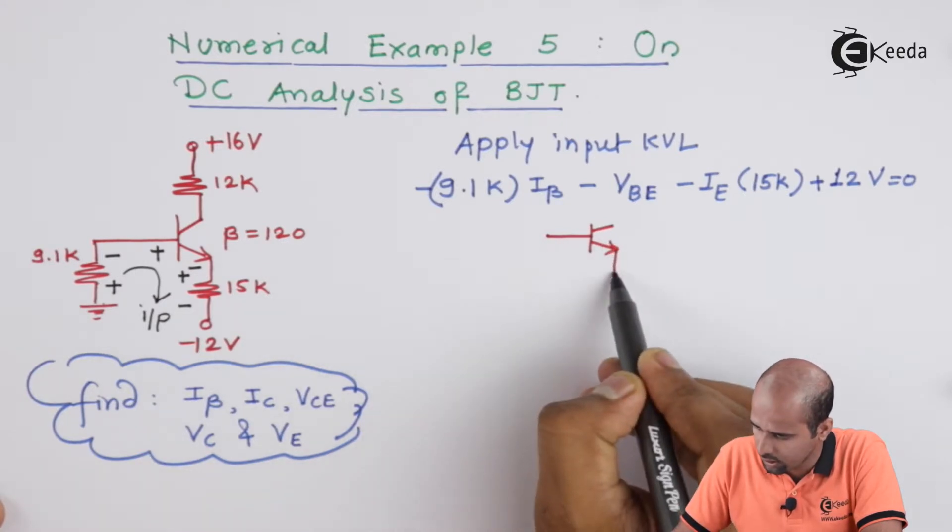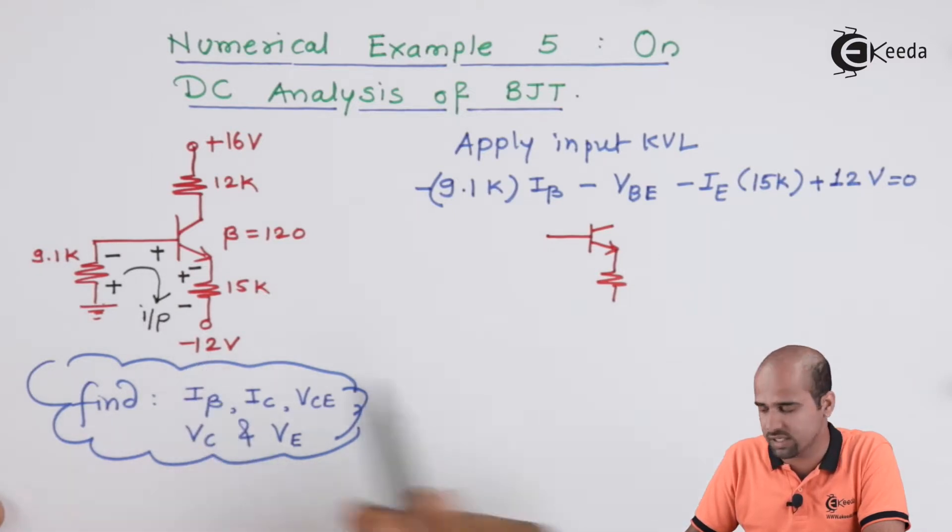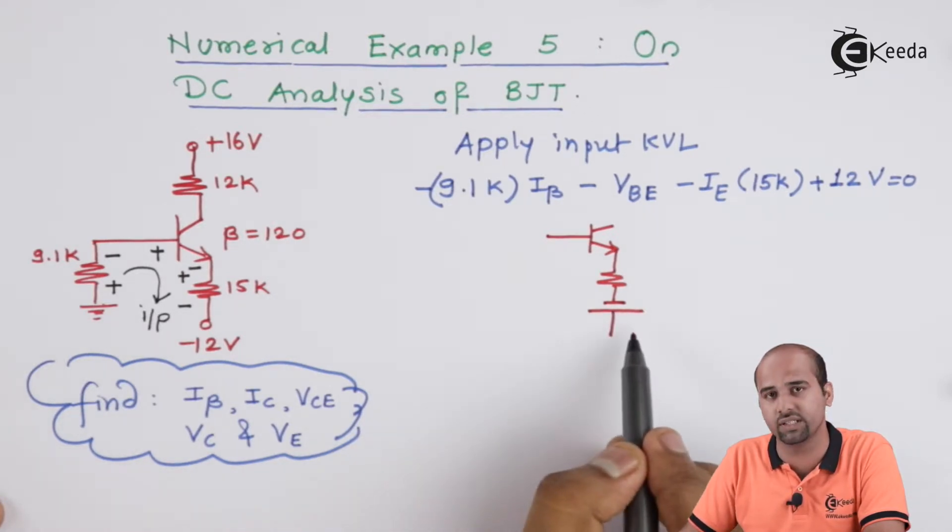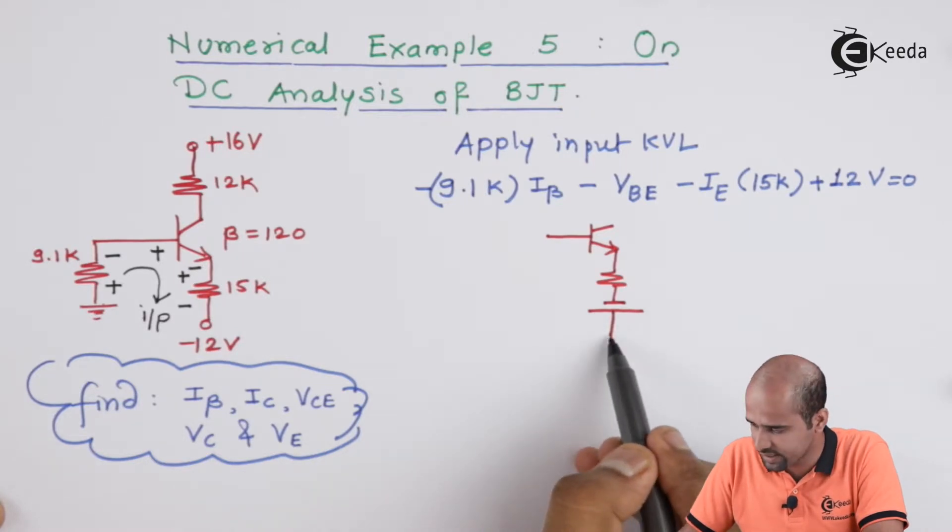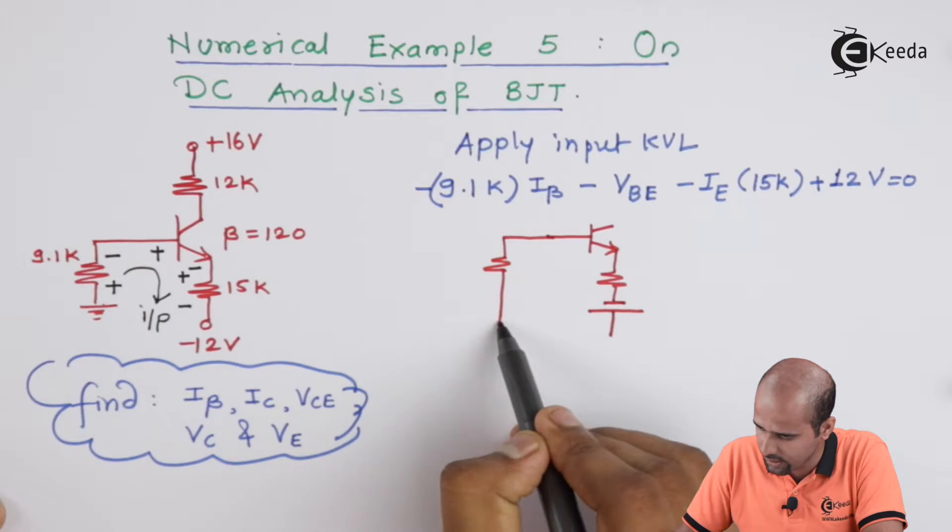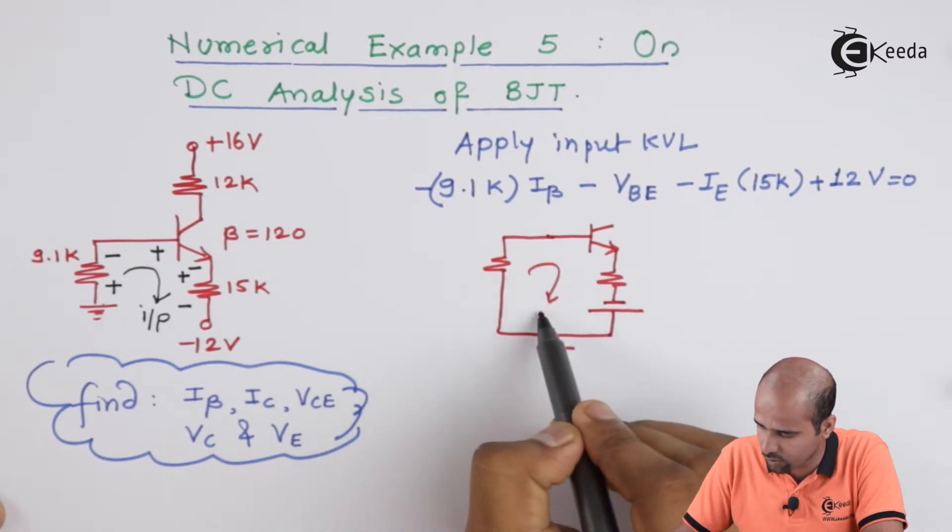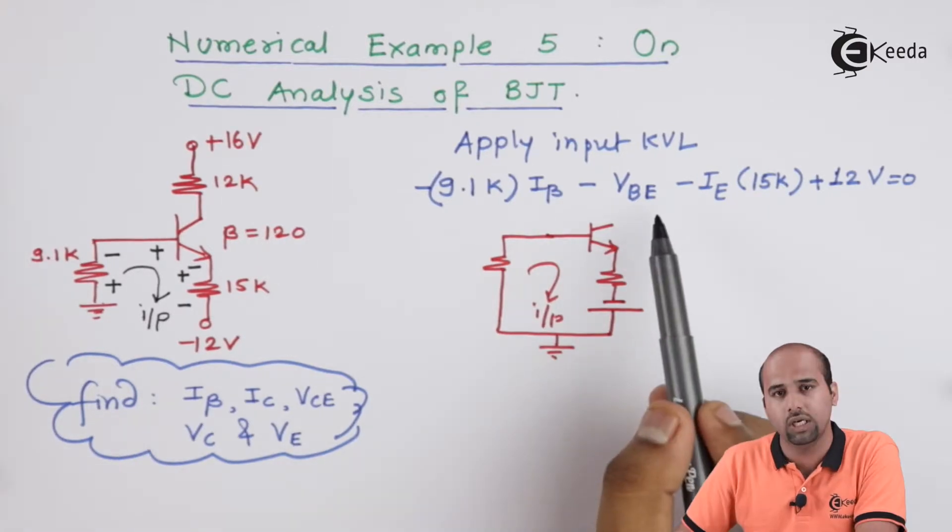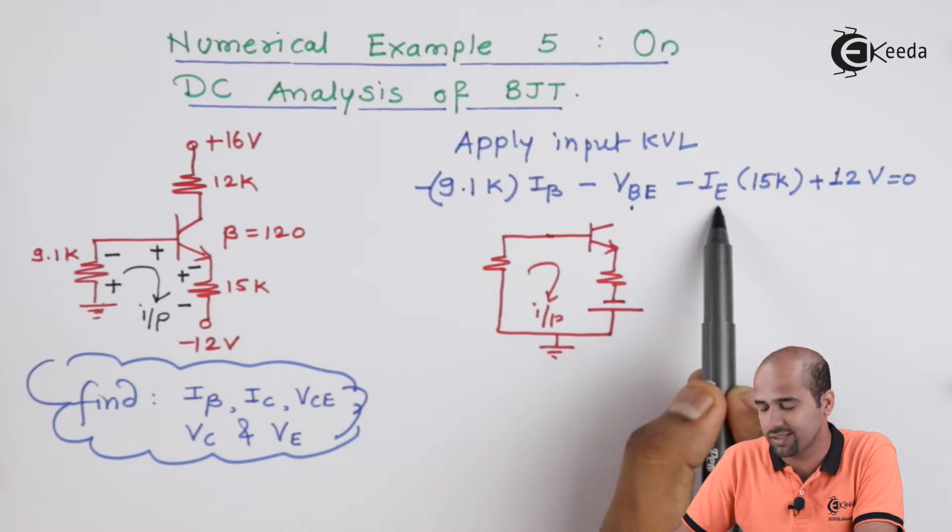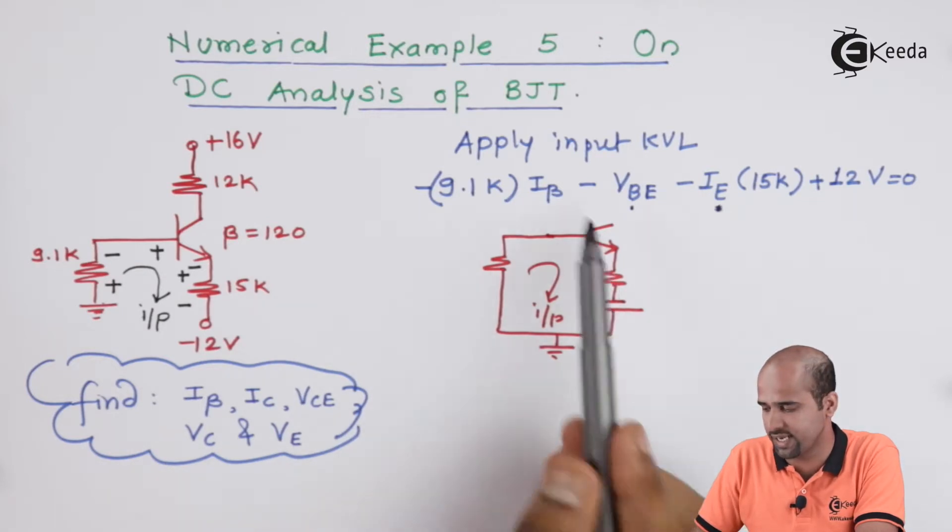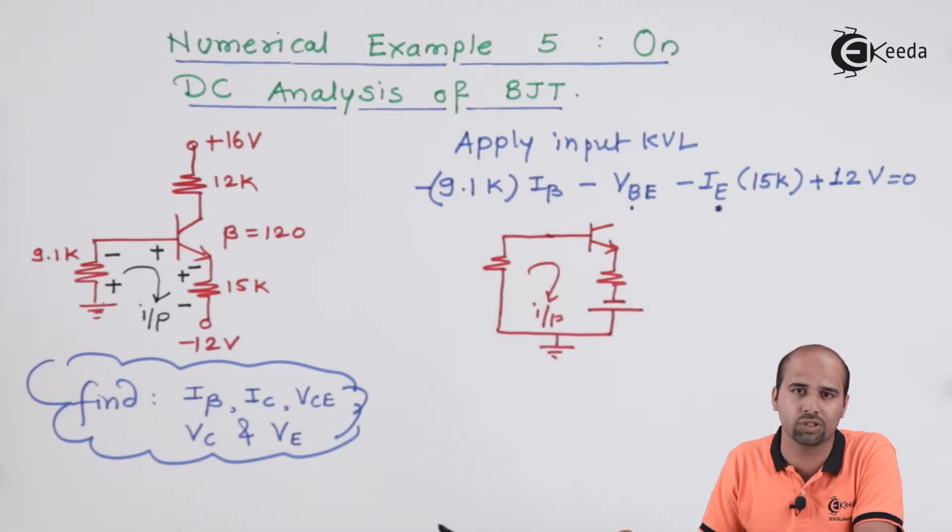This is the BJT VBE and here we will be getting RE. Instead of writing this minus 12 volts, I will take this polarity meter over here minus and plus. In this way, I am representing this 12 volt supply, negative 12 volt supply. And this is with respect to ground and this 9.1k is also with respect to ground. So, that forms a loop. And that is why this forms here input KVL. Now, in this we have the value of VBE 0.7. We can represent the value of IE in the form of beta plus 1 multiplied by IB. And beta value is given as 120. So, everything is known to us except the value of IB.